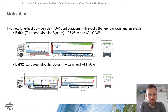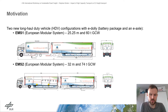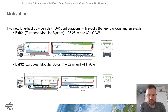The two new long-haul duty vehicle configurations are called EMS1 and EMS2, for European Modular System. The EMS1 has a gross combination weight of about 60 tons and the EMS2 has a gross combination weight of about 70 to 40 tons. Both are equipped with an e-dolly which allows independent moving of the trailer.